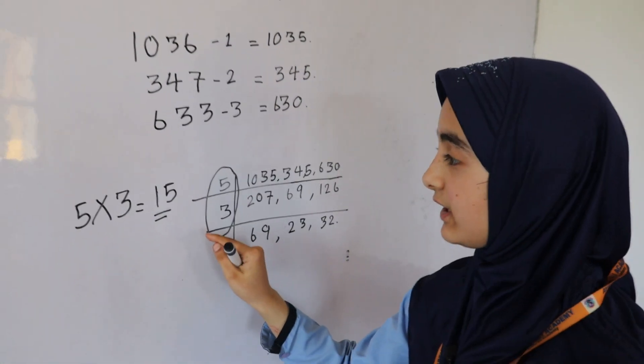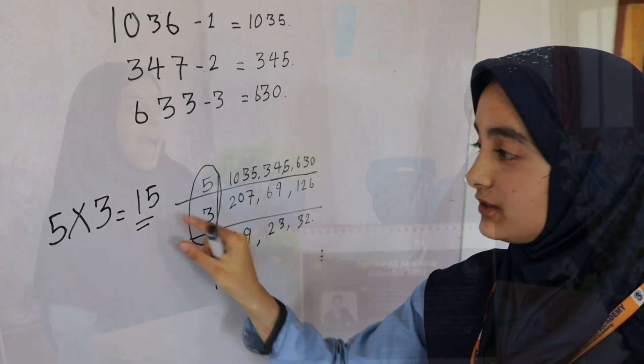Thus the required greatest number is 15. Now, as we discussed HCF, Imania can you tell me what is LCM? Yes. The smallest common multiple of two or more numbers is called the LCM. There are three methods by which we can find the LCM: first by listing multiples, second by prime factorization method, and third by simple division method.